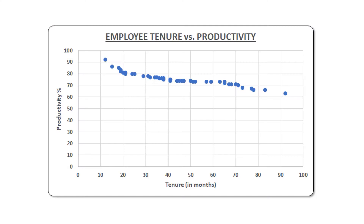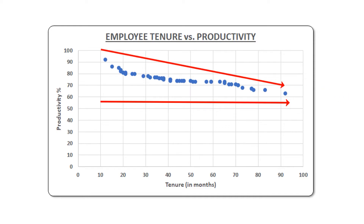Let's analyze the scatterplot. You will find that as the tenure of the employees increases, their productivity is showing a lowering trend.